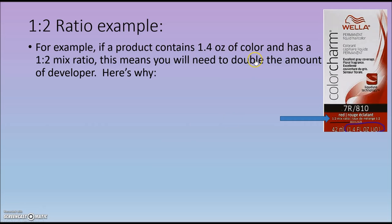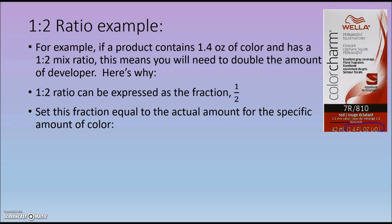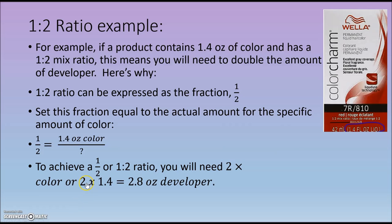This means you will need double, or 2 times, the amount of developer as that of the color. If we take the ratio of 1 to 2, expressed as a fraction 1 over 2, and set it equal to an equivalent fraction where the numerator is the amount of color — 1.4 ounces — we would need twice as much for the amount of developer. So we take 2 times 1.4, which results in 2.8 ounces of developer.